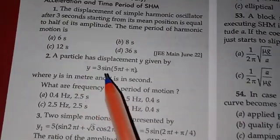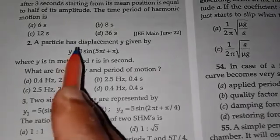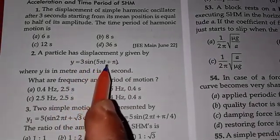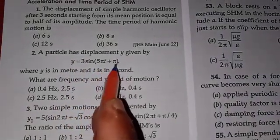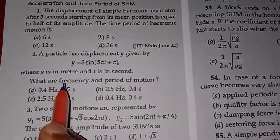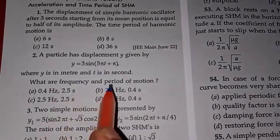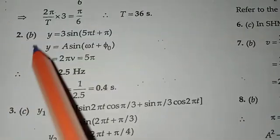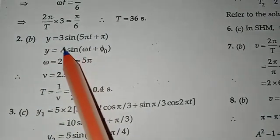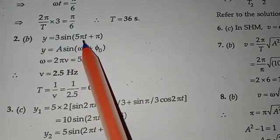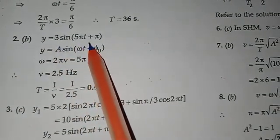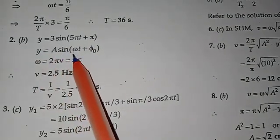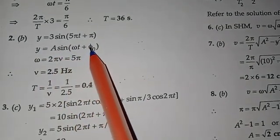The displacement is given by y = 3 sin(5πt + π). We compare this with the standard form y = A sin(ωt + θ). From comparison, ω = 5π.